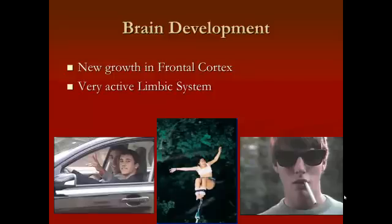Coupled with the underdeveloped frontal cortex, we have a very active limbic system during adolescence. The limbic system is involved in a lot of emotional responses. So if you have a weak frontal cortex and a very strong emotional limbic system, the strong emotional system overrides the other. This is why teenagers engage in a lot of emotionality — their moods change dramatically and they respond with more excessive emotion than necessary, because they lack the frontal cortex to inhibit those behaviors and their limbic system is much more powerful.